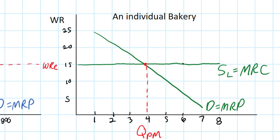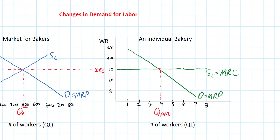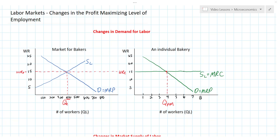It's so small compared to the entire market for bakers that it can't affect the market wage rate. So in this lesson, I want to talk about how changes in the demand for labor can affect the profit maximizing level of employment and the market equilibrium wage rate and level of employment. Let's tell a story in which the demand for labor among all the firms in this market increases and how it affects the equilibrium wage rate and level of employment.